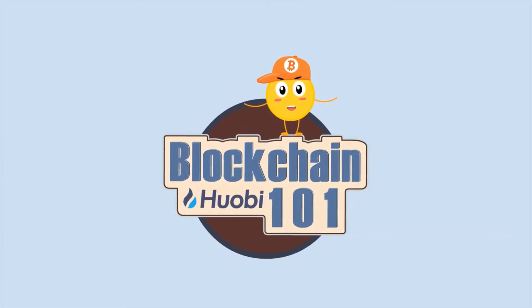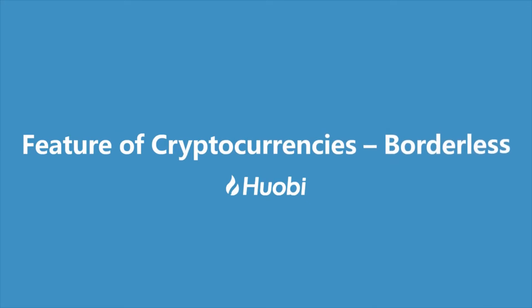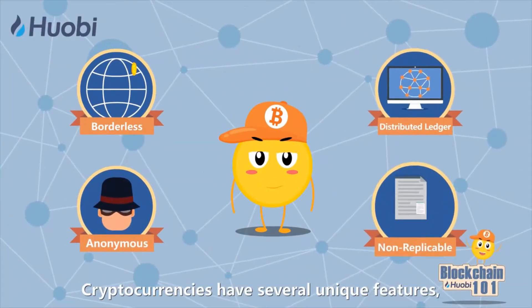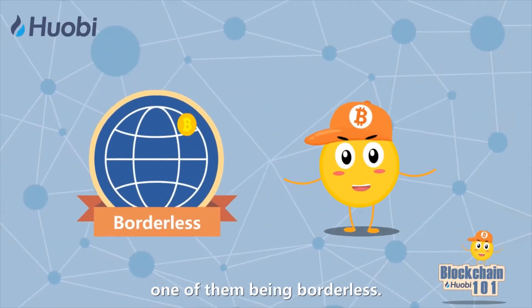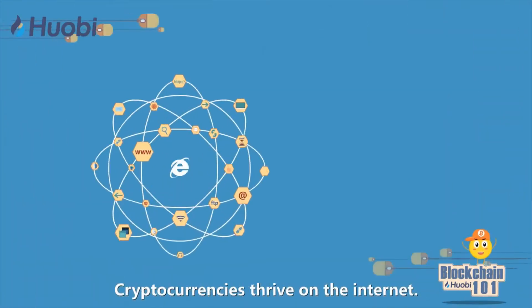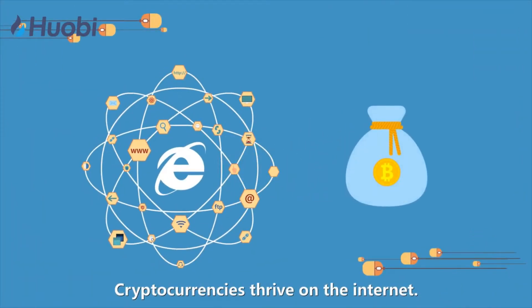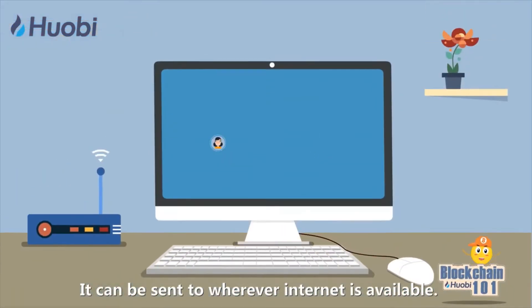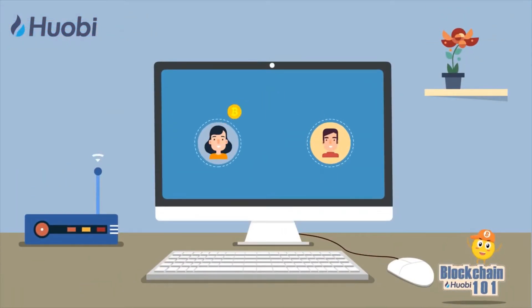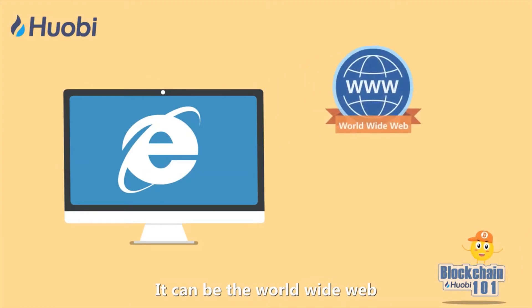One minute a day, Blockchain 101 — feature of cryptocurrencies: borderless. Cryptocurrencies have several unique features, one of them being borderless. Cryptocurrencies thrive on the internet; they can be sent to wherever internet is available, whether it's the world wide web or a local area network.